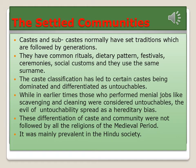Settled communities had set traditions followed by generations. They shared common rituals, dietary patterns, festivals, ceremonies, social customs, and used the same surname. In earlier times, those who performed menial jobs like scavenging and cleaning were considered untouchables, and this evil of untouchability spread on a hereditary basis. However, these differentiations of caste and community were not followed by all religions of the medieval period.